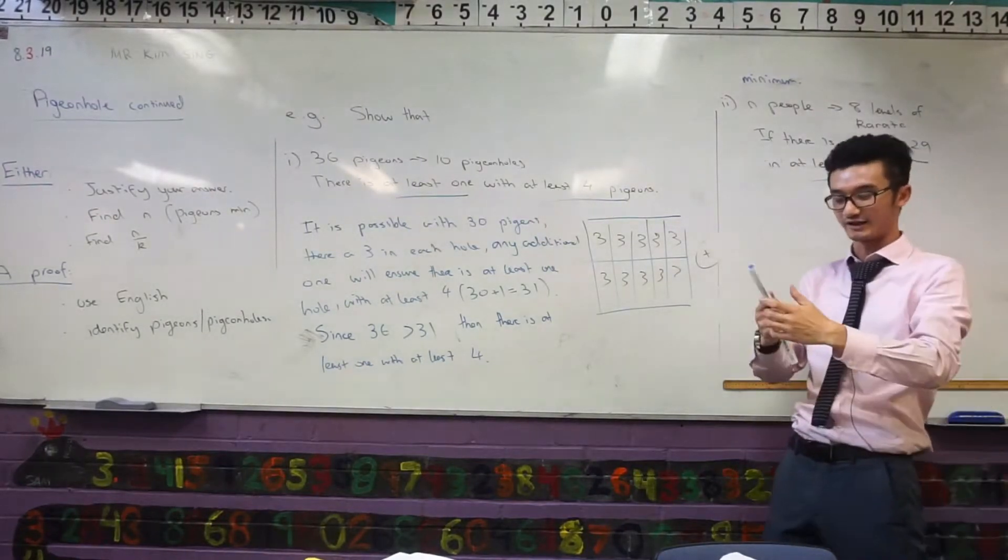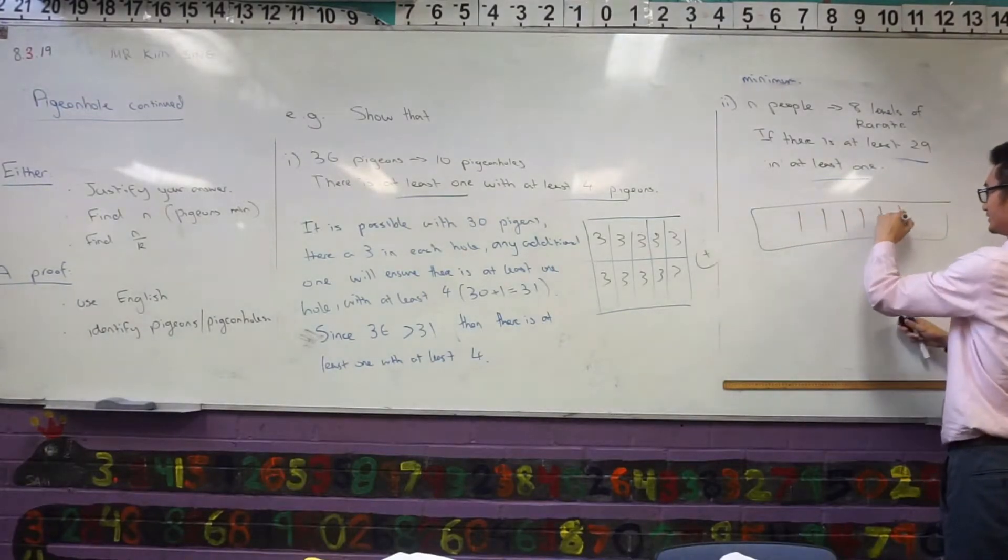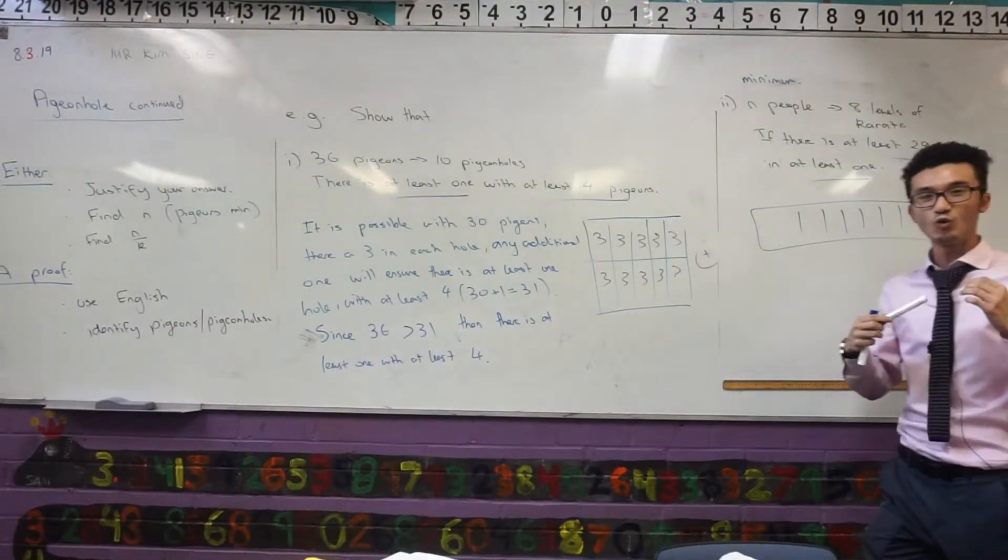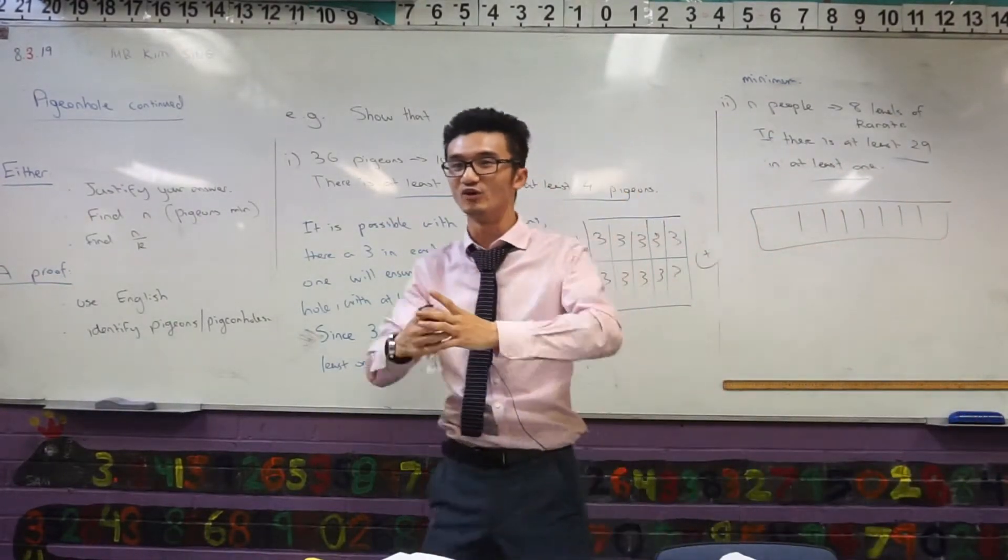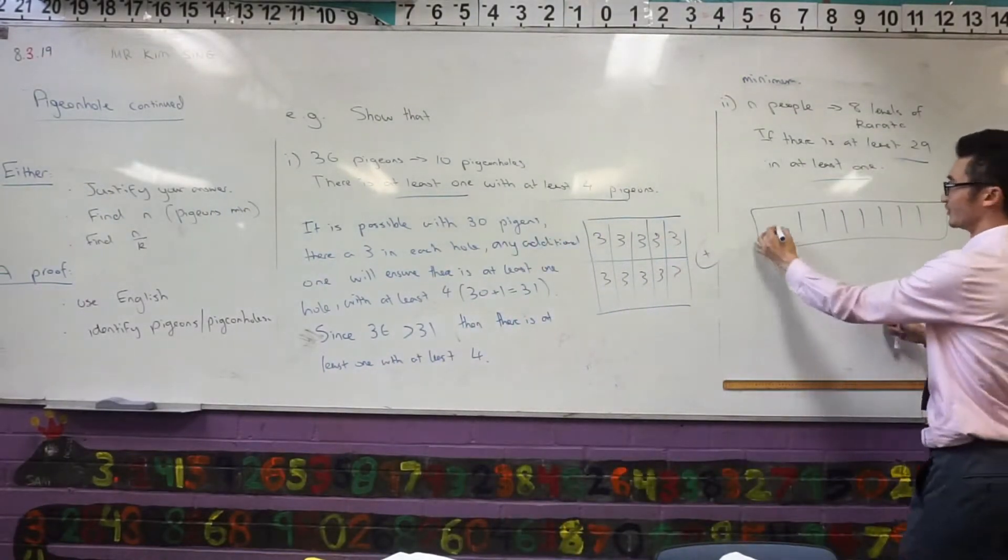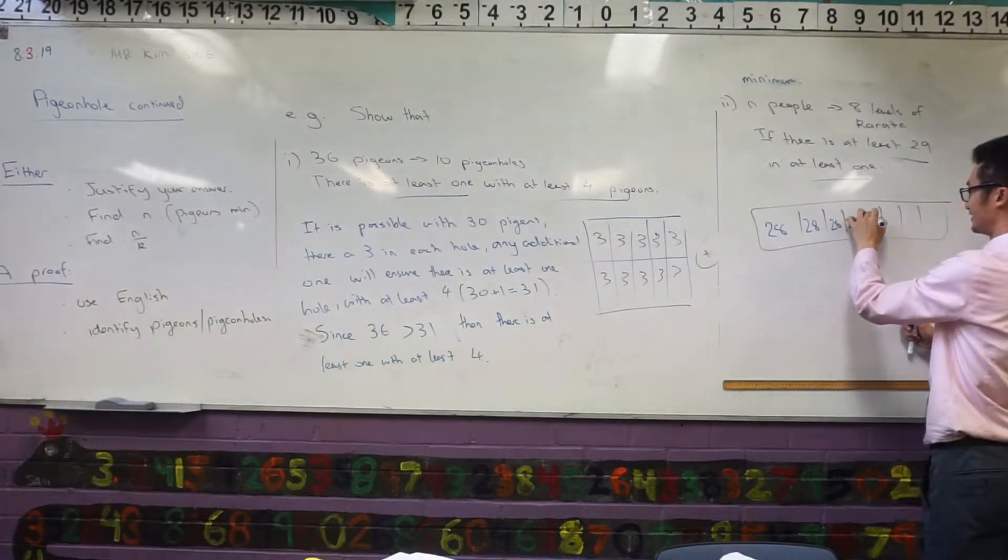So rather you want to think about, again, draw the diagram if that helps. One, two, three, four, five, six, seven, right? Here's my eight levels of karate, and the worst case scenario is that if I have all of them and they're all spread out, they're all assigned to one, but I'm spreading them all out. So where the condition's not met, that's exactly what Elora said, 28 in all of them.